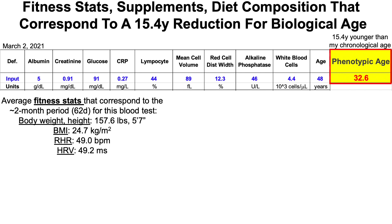In terms of average fitness stats, I posted a shirtless picture on my YouTube community page where you can see that I'm relatively lean. I weigh myself every day in the morning. My average body weight during the 62-day period between blood tests was 157.6 pounds. At 5'7", that gives me a BMI of 24.7 kilograms per meter squared, which is at the upper end of the lean category. My resting heart rate is 49 beats per minute, and my heart rate variability is about 49 milliseconds.